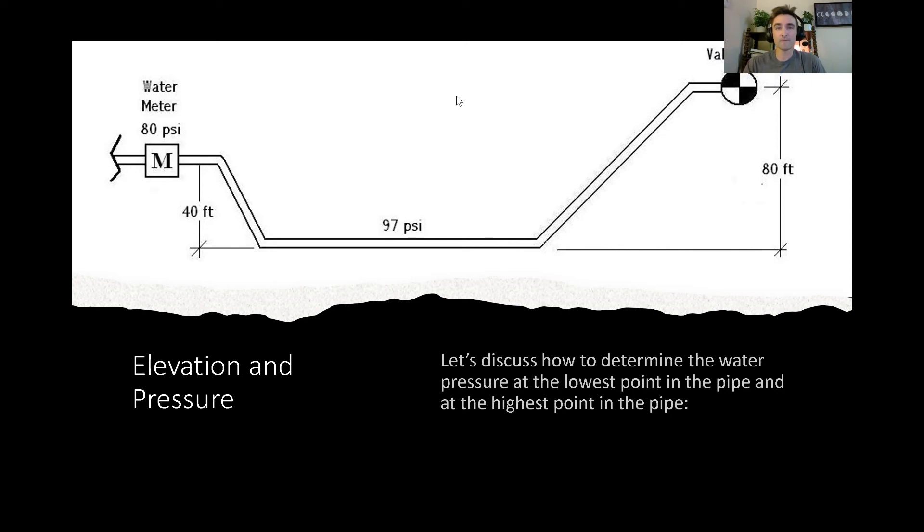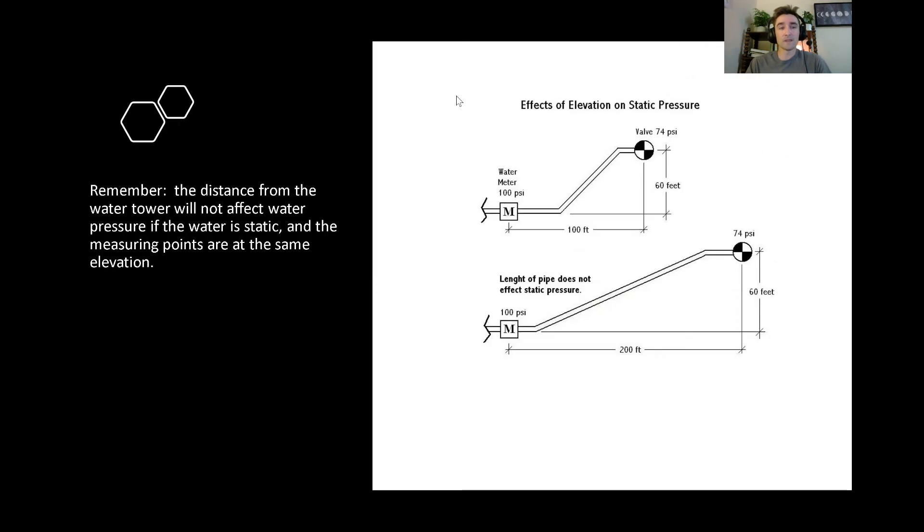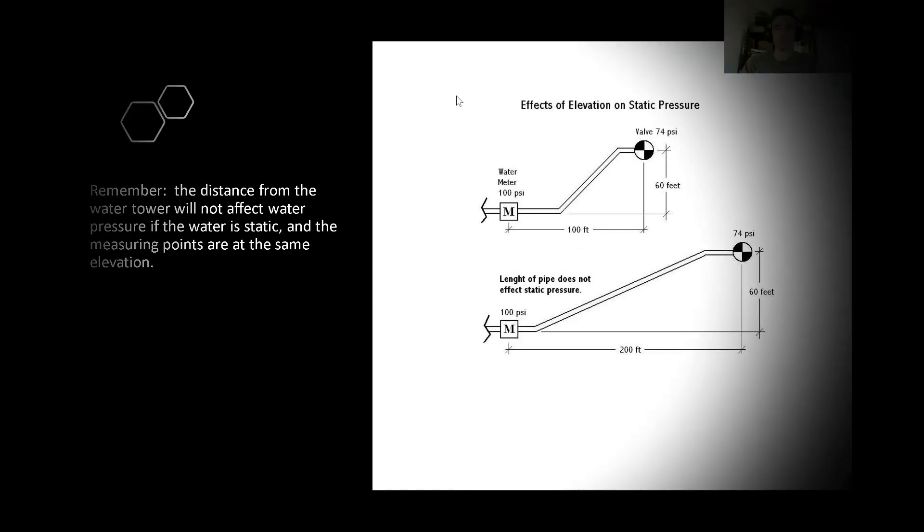This is important because if you want to have irrigation run up a hill, you're going to have to account for the pressure loss. So just remember that the distance from the water tower will not affect the water pressure if the water is static and if the measuring points are at the same elevation. So length of pipe has nothing to do with it. It can be 100 feet or 200 feet. And as long as the height, the finished height is the same, you'll have the same pressure.